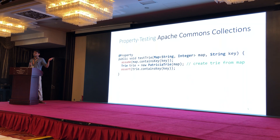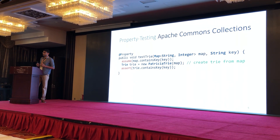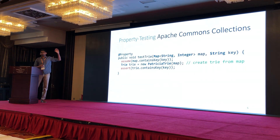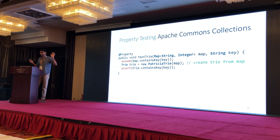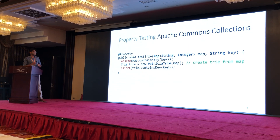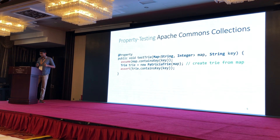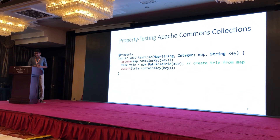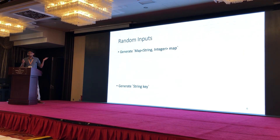So how do you verify this property? Property testing, popularized by tools like QuickCheck, simply calls this function many, many times with randomly generated maps and keys, and checks for any assertion violations — as long as the assumptions are true. This is in fact written using a Java port of QuickCheck, which does exactly this.